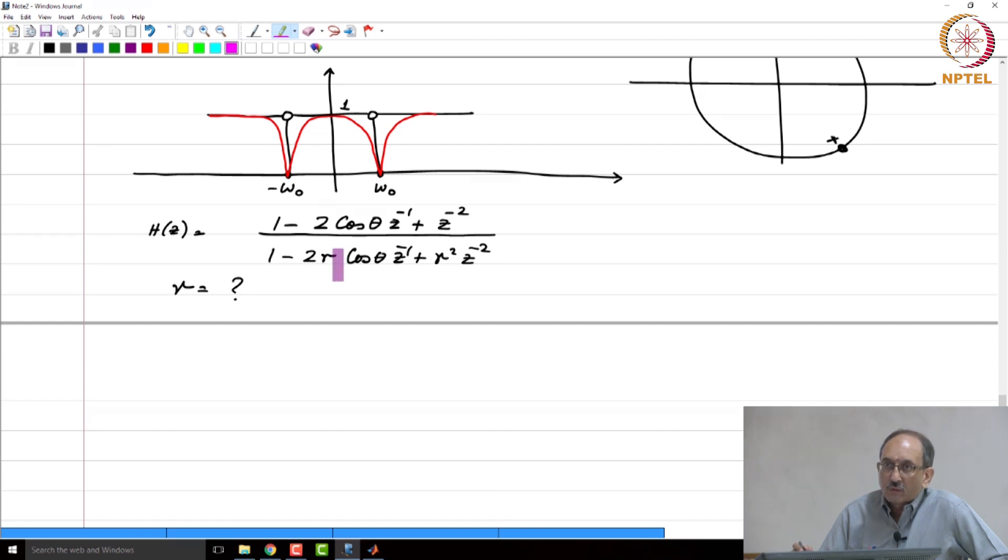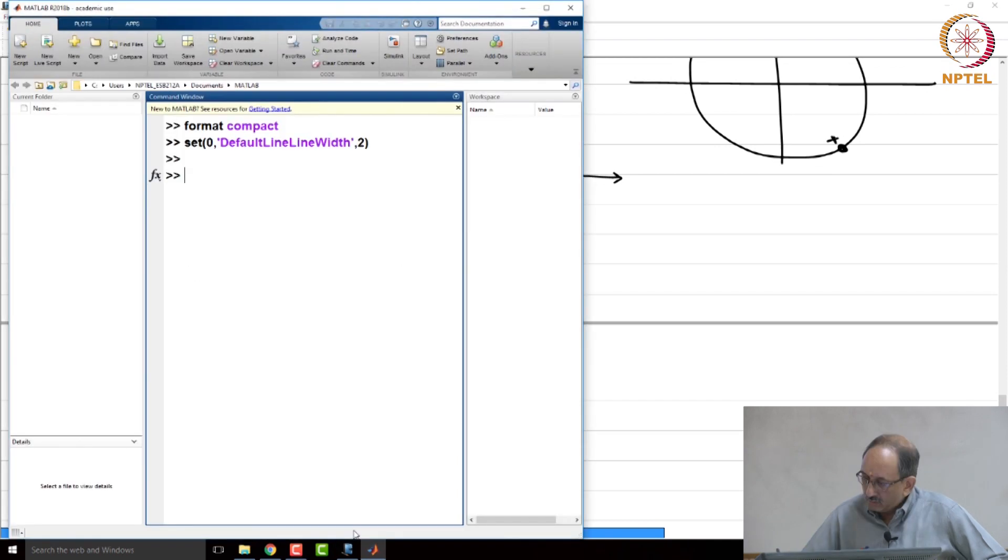So, in practice, what value of R you choose is dictated by finite precision effects. Remember, never forget that you are going to use finite number of bits to represent these coefficients and closer R is to 1, if you want to represent it more and more accurately, you will need lot more bits. And the more bits you have, the more expensive the system is going to become. So, how close R can be to 1 depends on how many bits you have to play with depends upon the cost of implementation.